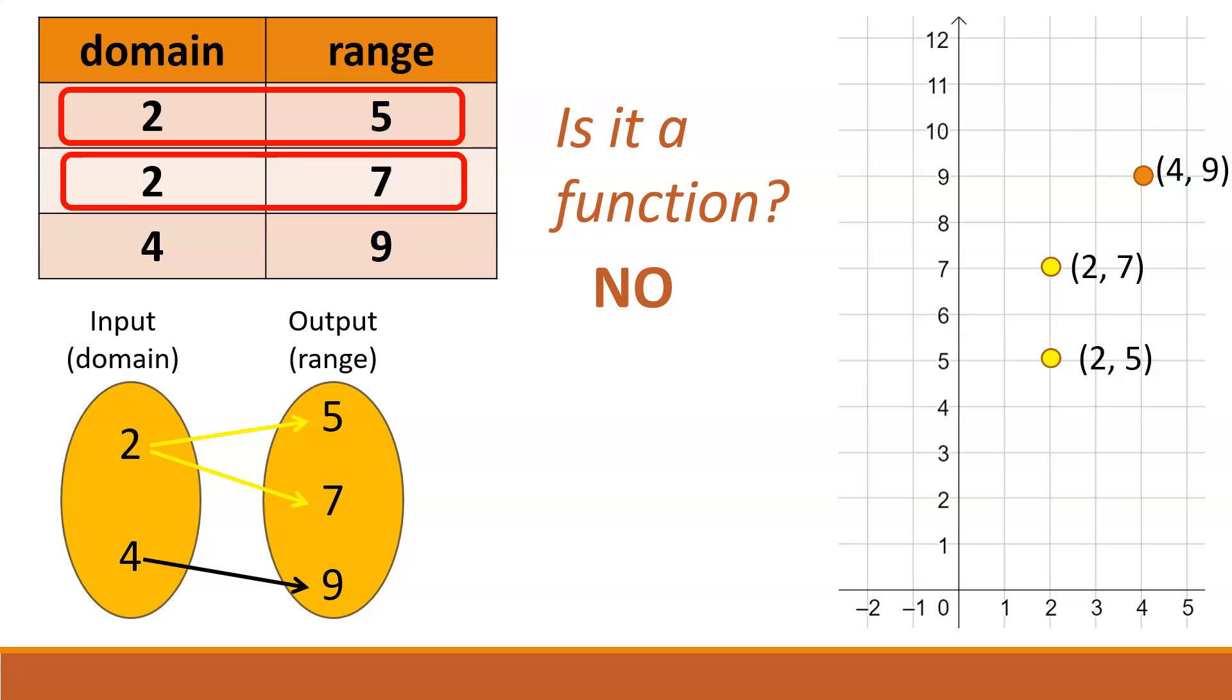Now, it may not be quite as obvious in the graph that this is not a function. So one way to identify that is by imagining a vertical line that goes through both 2, 7 and 2, 5. If we've got two points that lie on the same vertical line, they have to have the same x coordinate and different y coordinates. That would mean that the same domain value, the 2, is mapping to different range values, both the 5 and the 7.